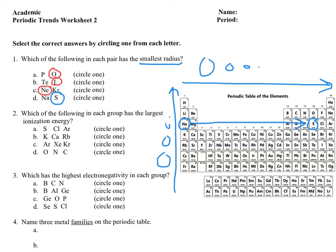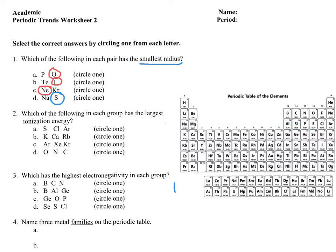Question two asks which of the following in each group has the largest ionization energy. Ionization energy is how much energy it takes to pull an electron off of an atom — the smaller the atom, the greater the energy required. For sulfur, chlorine, and argon: since argon is furthest to the right, it has the smallest atomic radius, which means it has the largest ionization energy and is the hardest to pull an electron from.